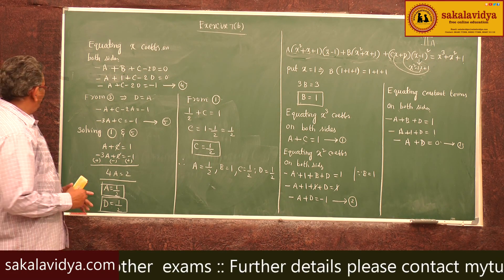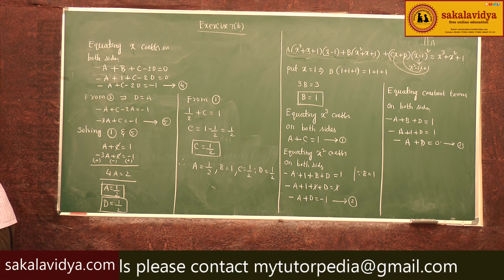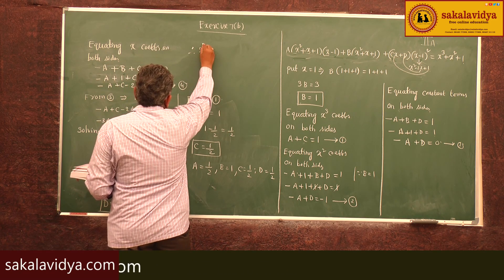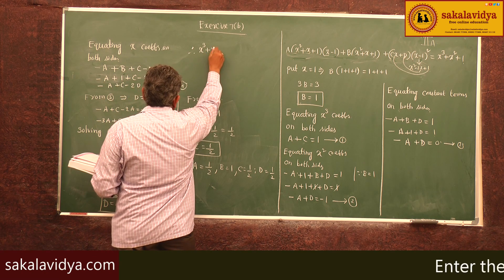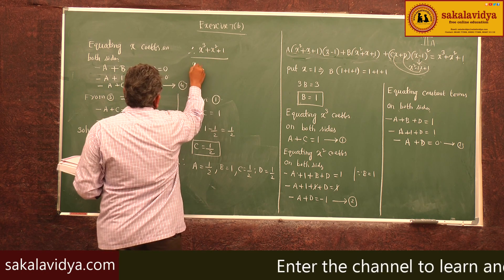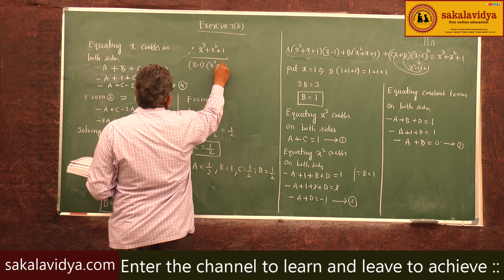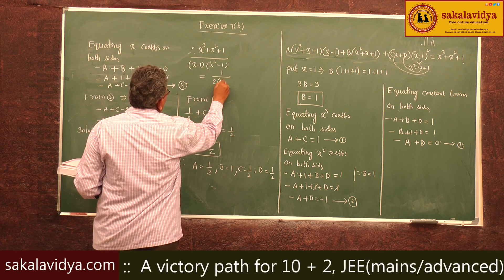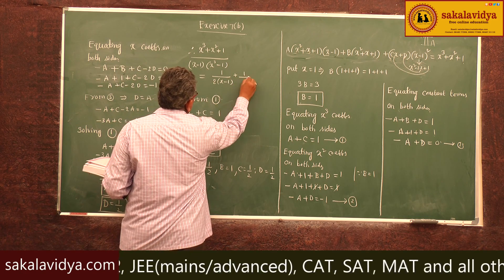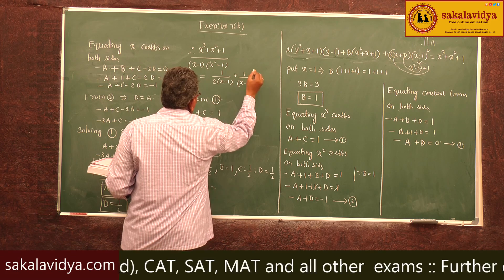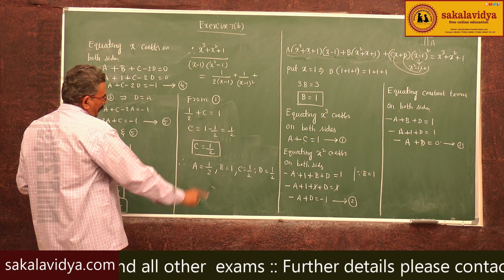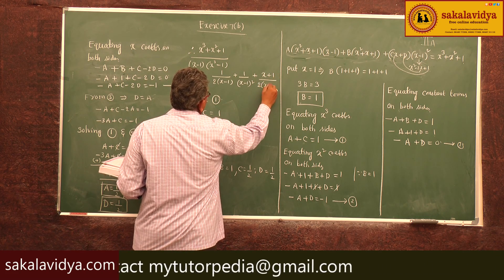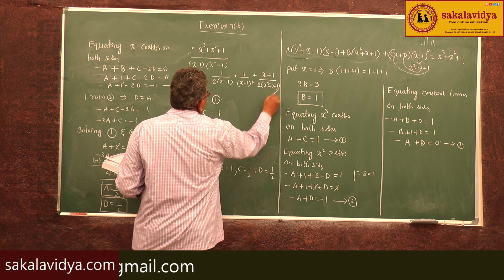Therefore, the partial fraction decomposition is: (x³ + x² + 1) / [(x-1)(x³-1)] = (1/2)/(x-1) + 1/(x-1)² + (x/2 + 1/2)/(x² + x + 1). These are the required partial fractions.